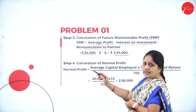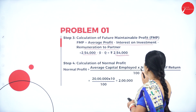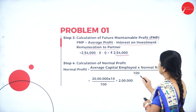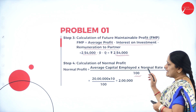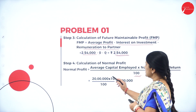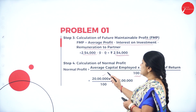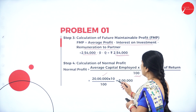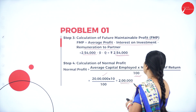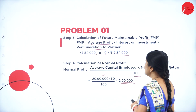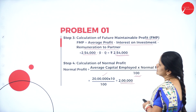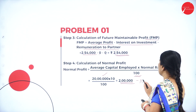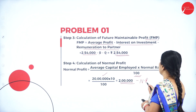Calculation of normal profit: average capital employed multiplied by normal rate of return divided by 100. The average capital employed is 20 lakhs at 10 percent, which comes to 2 lakhs. So 2 lakhs is the normal profit.